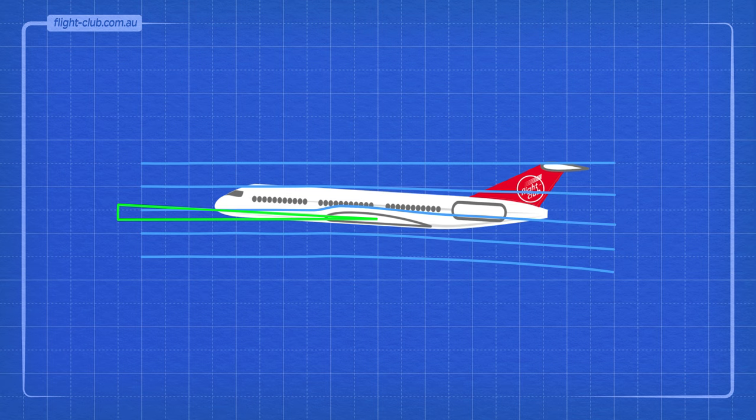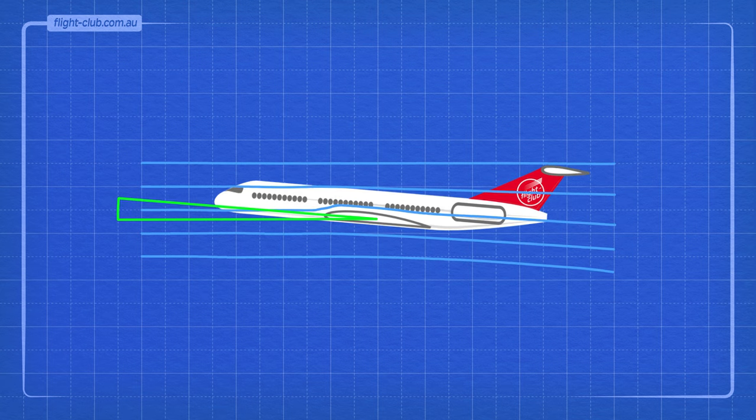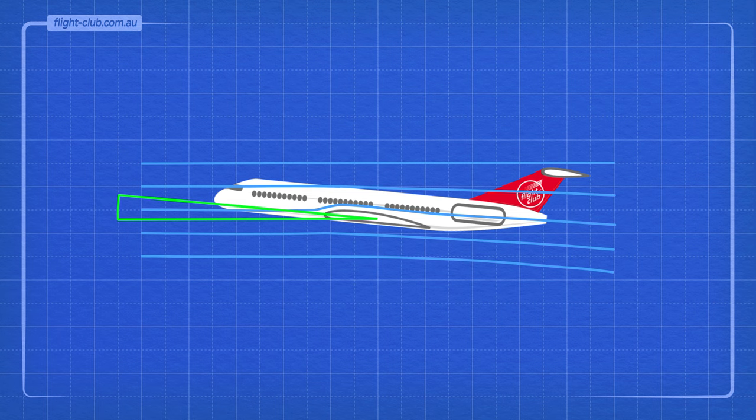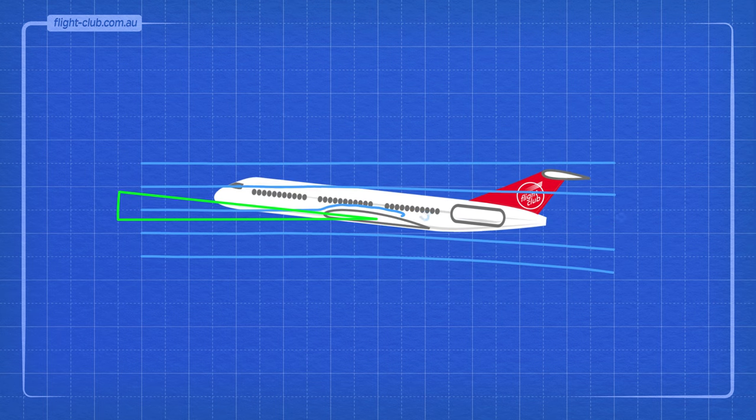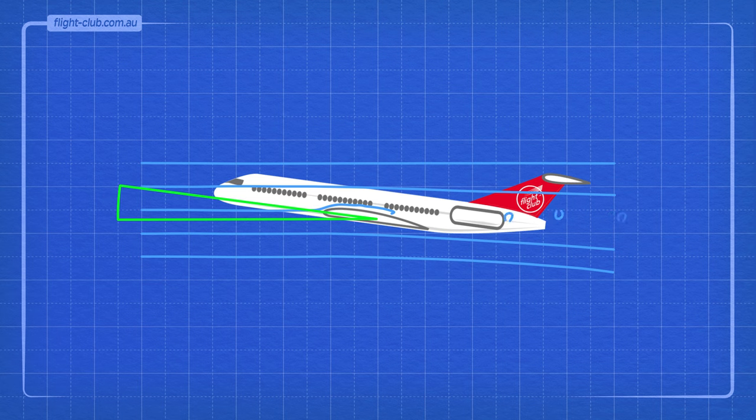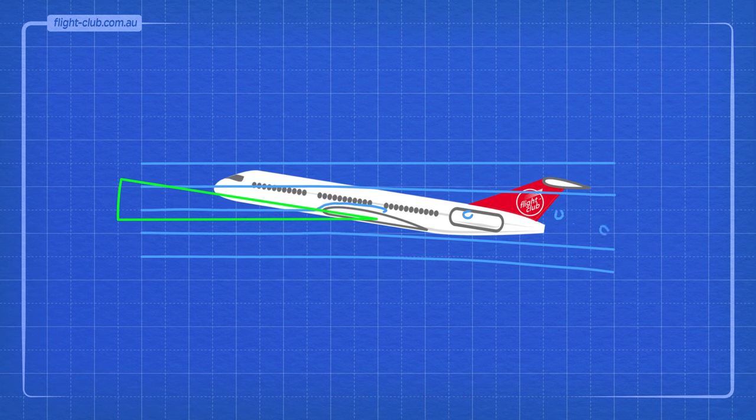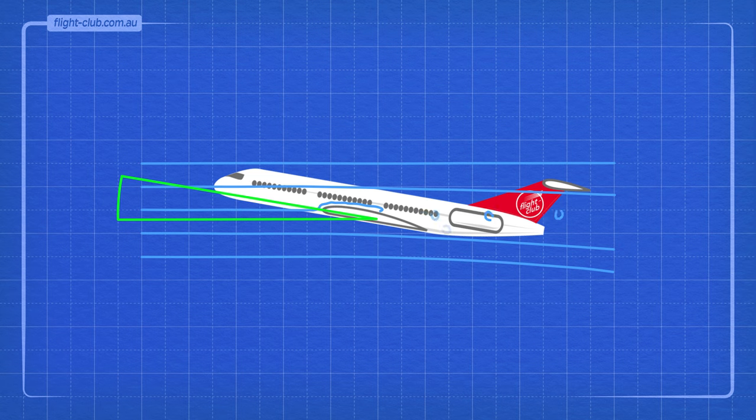As the angle of attack increases towards the critical angle of attack, the wingtips of a swept wing aeroplane tend to stall first. From here, the upper surface airflow produces a wake of turbulent and slower airflow behind the wingtips.